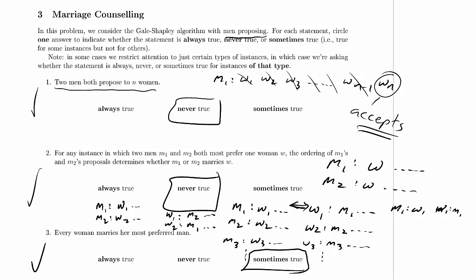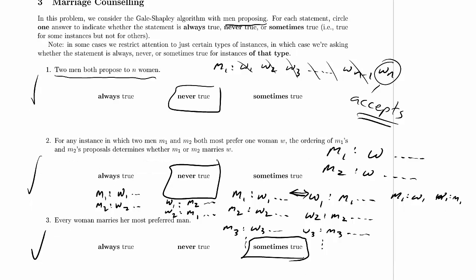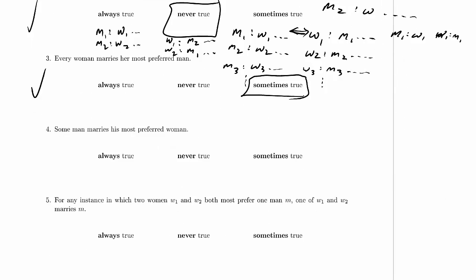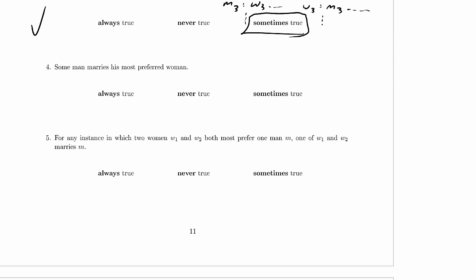There are more problems. Some man marries his most preferred woman. We just saw m-1 likes w-1 and w-1 likes m-1 — they get married, so this can happen. Is it always true that some man marries his most preferred woman, or can we construct a situation where it won't happen? That seems trickier.